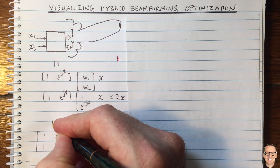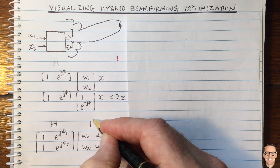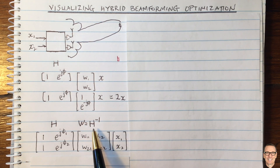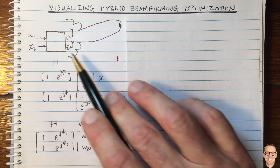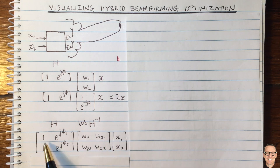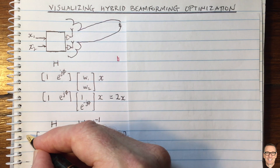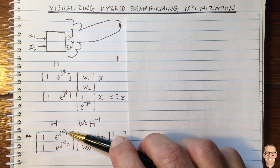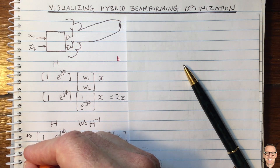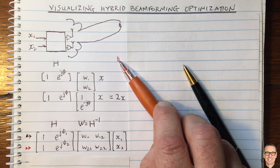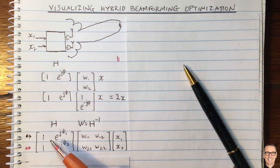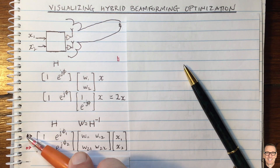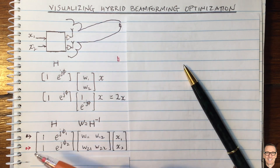Here we've got our channel matrix H, and we could make our precoding matrix be the inverse of H — we call this zero forcing. The multiplication of these two matrices and a vector gives you a vector. The first element gives you the signal received in the black direction (phi 1), and the second element gives the signal received in the red direction (phi 2). If our precompensation is the inverse of the channel, the multiplication gives the identity, so at the black user you only get X1, and at the red user you only get X2.